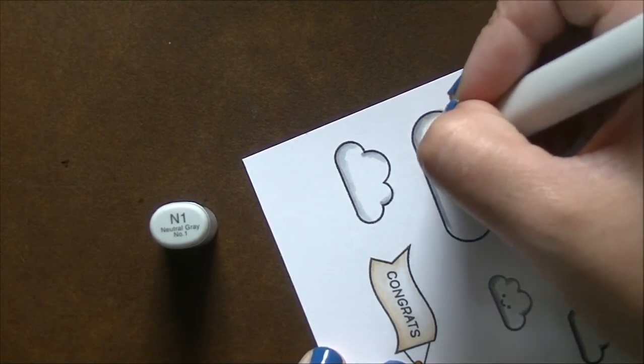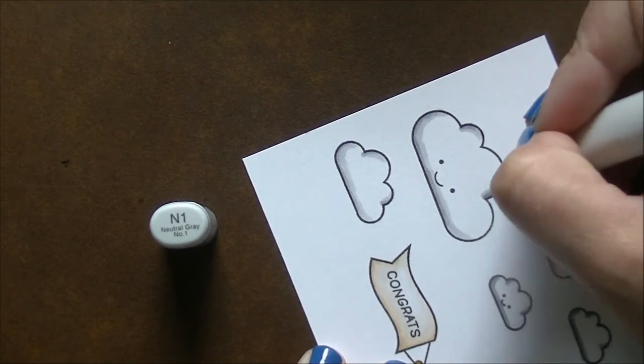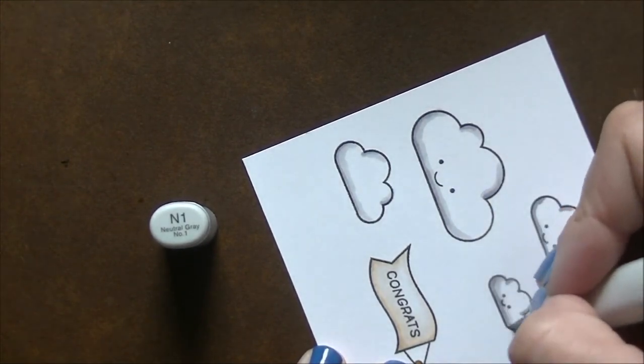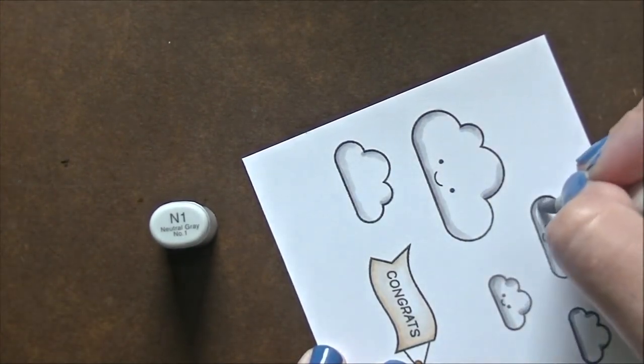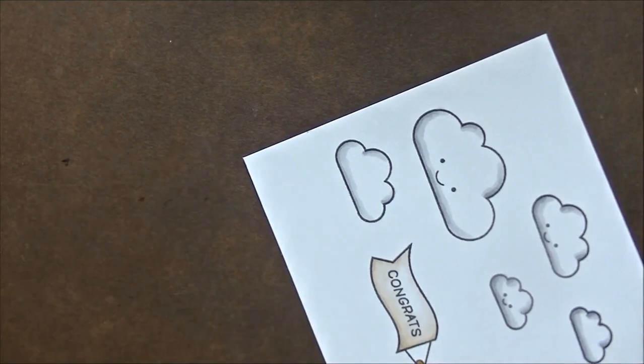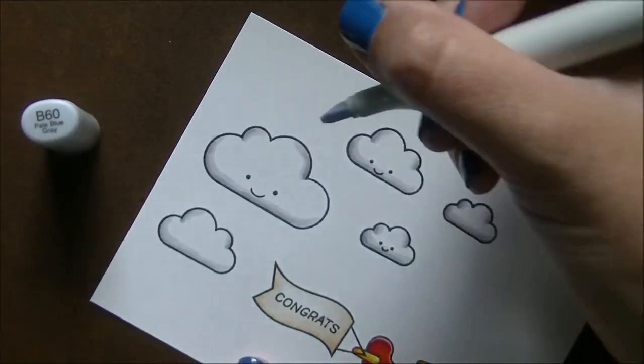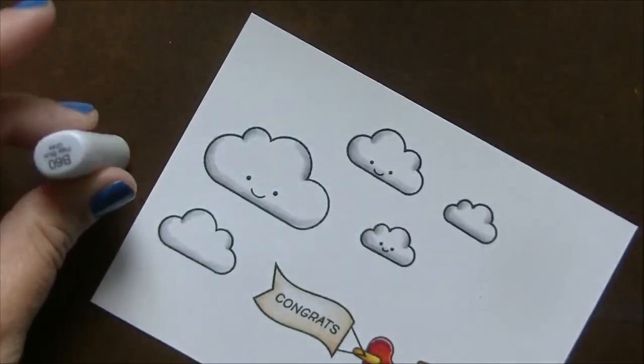N1 and I'm blending that out and then I'm going to pop in with a BG60 and that's just going to give those clouds a little bit of a blue undertone to them. It just gives them a little more life and they don't look quite so stark and gray and white against the contrast of the ultramarine blue that I'm going to use to create the background.